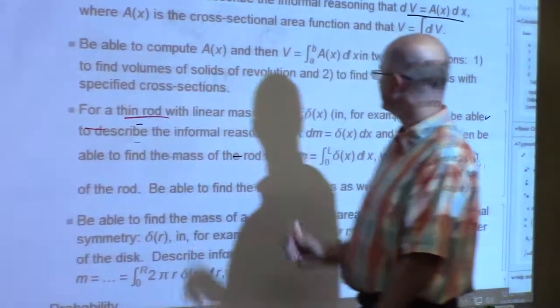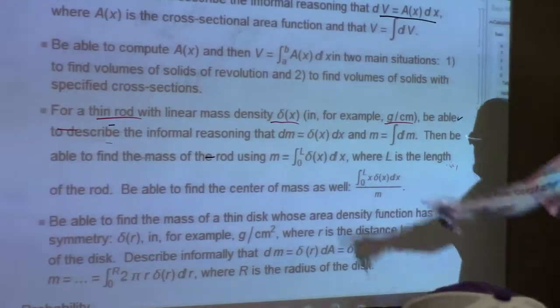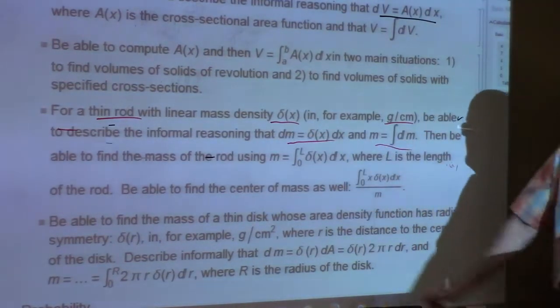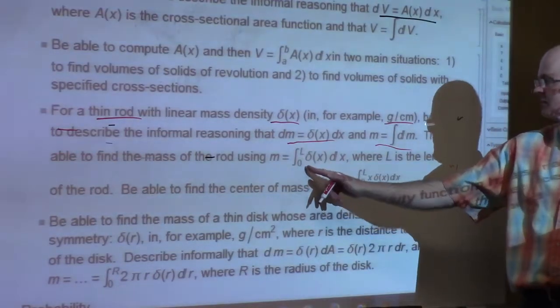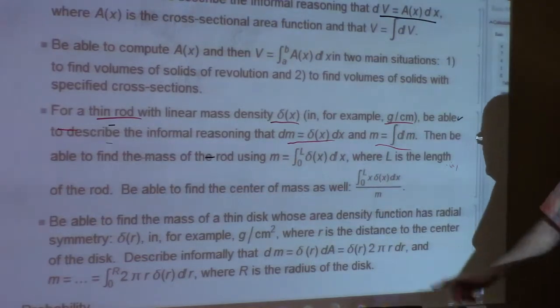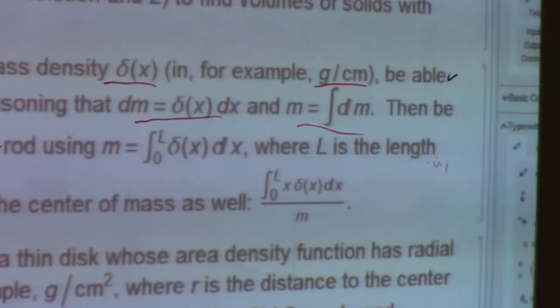Masses of thin rods, linear mass density, delta of x, and we say grams per centimeter. There's informal reasoning there as well. And if the length of the rod is L, and I've chosen coordinates so that it goes from 0 to L there, that's the integral you do. Once you get the mass, you can do this integral and divide by the mass, that's the center of mass, which is the balance point.